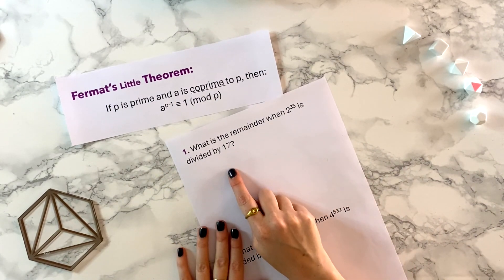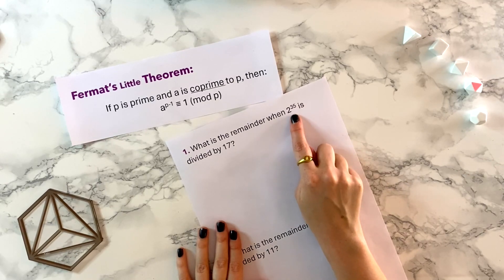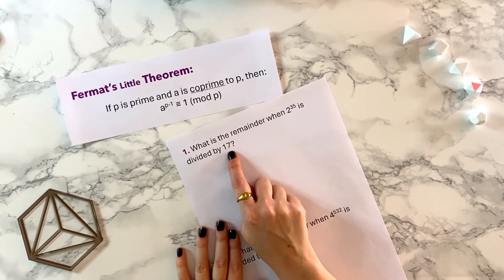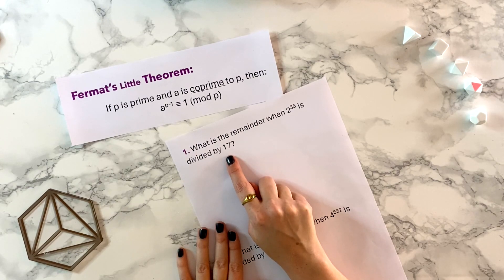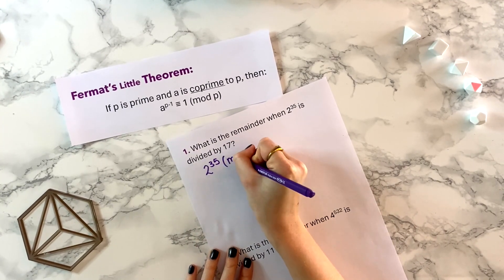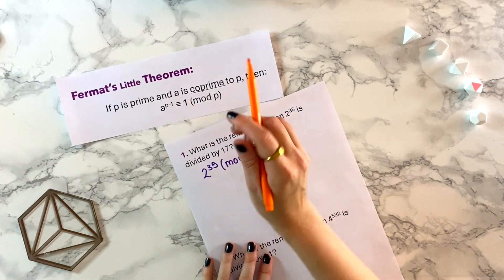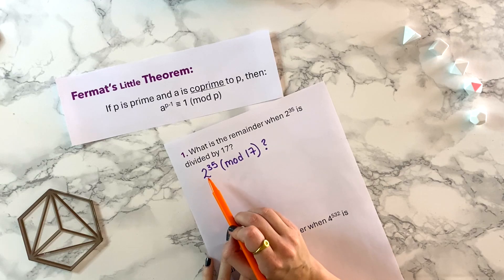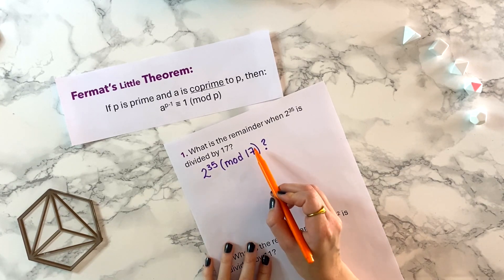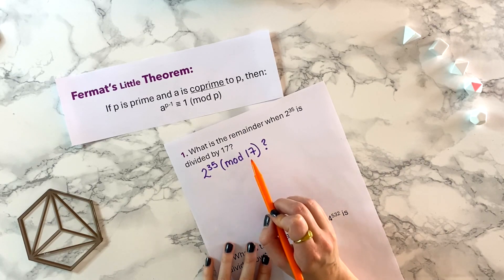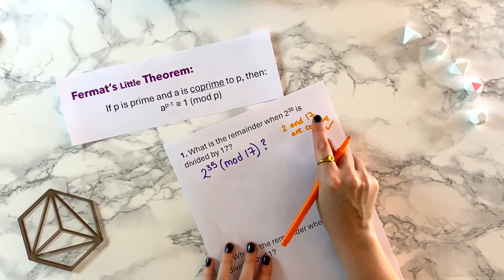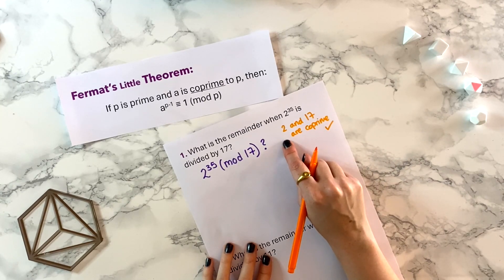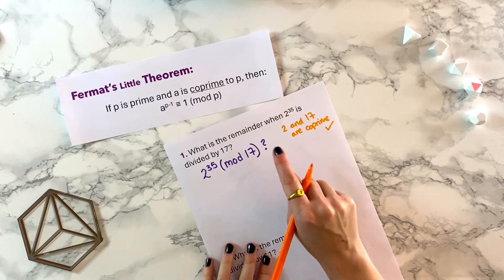You might be wondering why this is useful. We'll go on to some examples in a moment, but crucially this theorem gives us a fairly big power that's congruent to one, which is very helpful because one times one is just one — it makes multiplications of high powers a lot quicker. So let's look at this first question: what is the remainder when two to the power of thirty-five is divided by seventeen? This is exactly the same as asking: what is two to the thirty-five mod seventeen? Two and seventeen are both prime, so the only factor they share is one — they are co-prime, and we can use Fermat's Little Theorem.